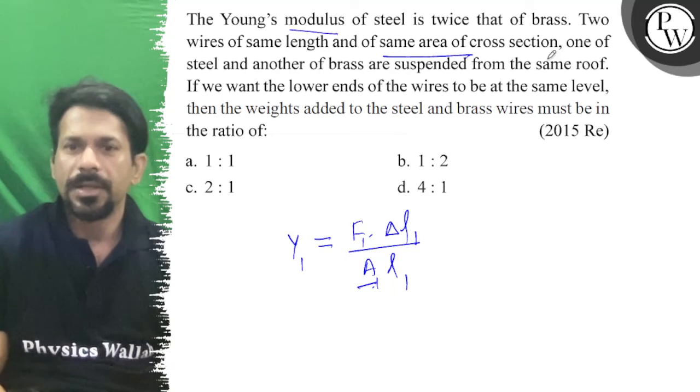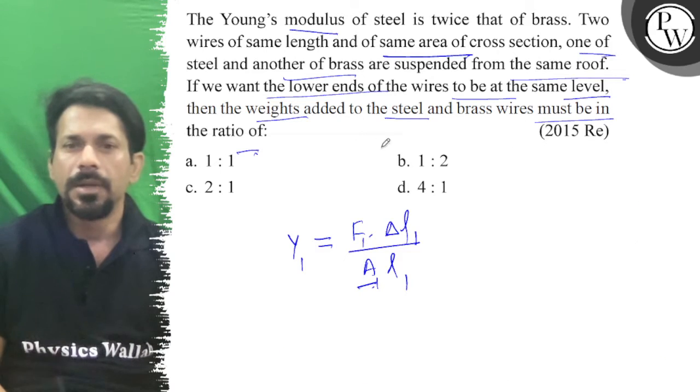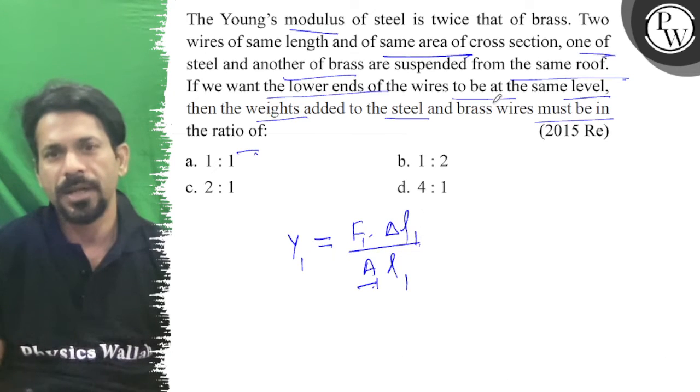Young's modulus - one of steel, another brass, same roof, lower ends at the same level. Weight added to steel must be in the ratio... What did he say about ΔL? Same length, ΔL is at the same level.